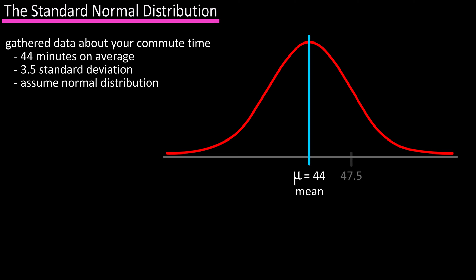If we add one standard deviation to the mean, we get 47.5 here, and adding two standard deviations, we get 51 here. Subtracting one standard deviation from the mean, we get 40.5 here, and subtracting two standard deviations from the mean, we get 37 here.